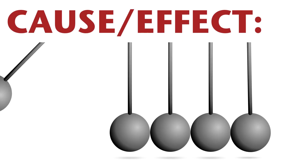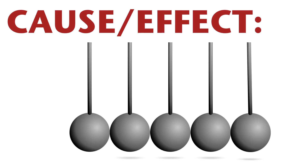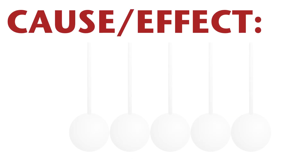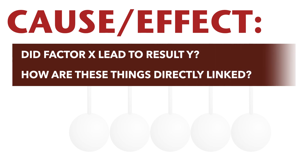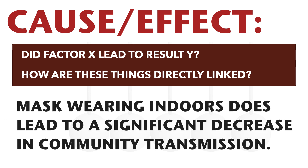Next up is cause and effect. Cause and effect arguments are concerned with demonstrating a direct link between two sets of circumstances and showing the mechanism by which one thing directly causes another. These claims are concerned with showing how X leads to Y, or showing how things are directly linked. Going back to our essay topic, a cause claim might argue that mask wearing in public buildings does lead to a significant decrease in community transmission.